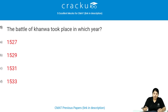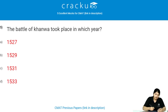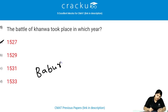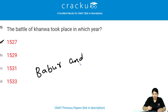The Battle of Khanwa took place in which year? The Battle of Khanwa took place in the year 1527. It was between Babur and Rana Sanga of Mewar.